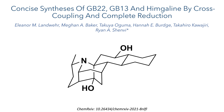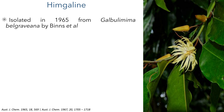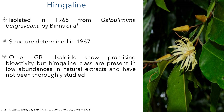This work was uploaded to ChemArchive by the Shenvey Group and details their synthesis of hymgaline and also GB22 and GB13. Hymgaline is a natural product that was first isolated in 1967 from the Galbula Mima Belgraviana plant, though its structure wouldn't be determined until two years later. Other alkaloids isolated from this plant show promising bioactivity, but the hymgaline class have not been studied thoroughly as they are present in low abundance in natural extracts.